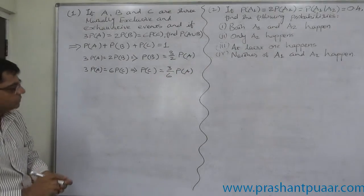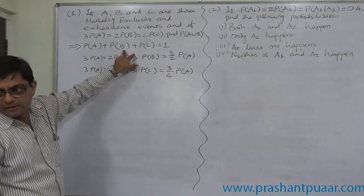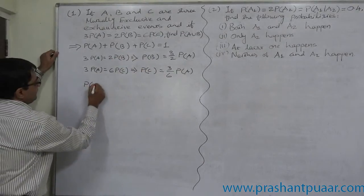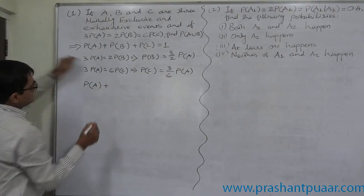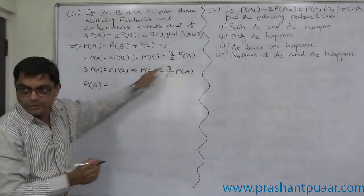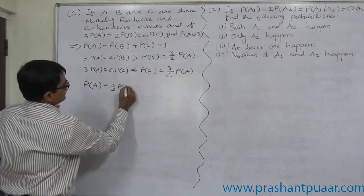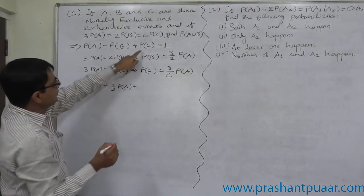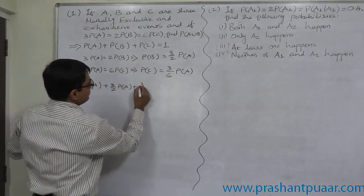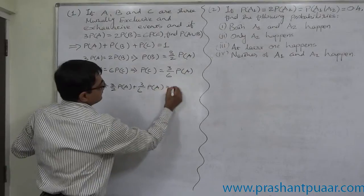Now we can substitute this relationship into the formula. P of A plus, instead of P of B, 3/2 · P of A, plus instead of P of C, 3/6 · P of A, equals 1.